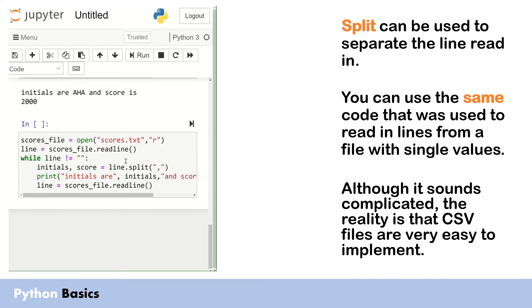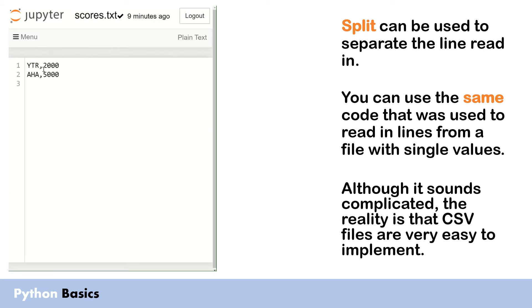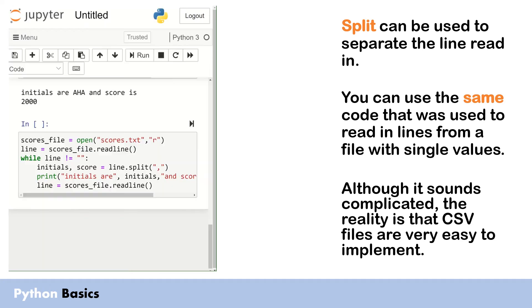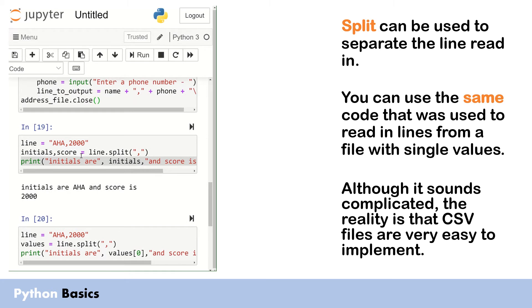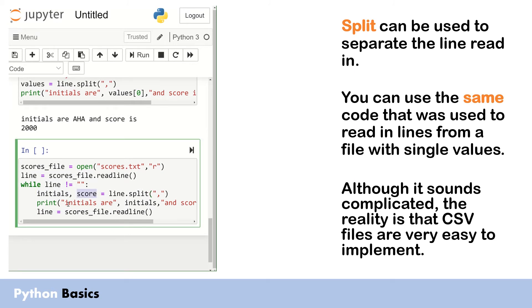Now let's look at how we can use this split command in relation to a file. I've got a file called 'scores' that we're going to read from, and as you can see it's got two scores in there, split using a comma with initials and score. First we open it in read mode since we're reading from the file, not writing to it. Then I read the first line and use the same loop as before — if whatever we're reading is empty we don't do anything. Then 'initials, score = line.split' will do the split as before, giving us the initials and score as two separate variables. We print them out, read the next line, and then close the file.